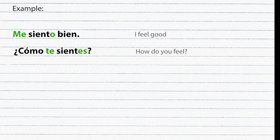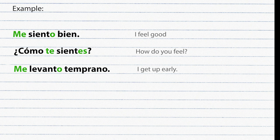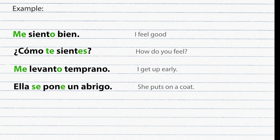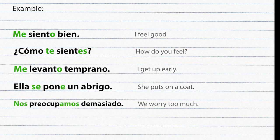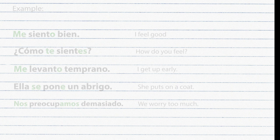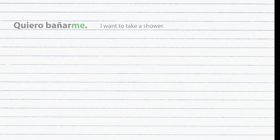Examples: Me siento bien. ¿Cómo te sientes? Me levanto temprano. Ella se pone un abrigo. Nos preocupamos demasiado. The reflexive pronoun is placed before the verb, except when it is an infinitive or a command — in that case, it is attached to the end of the verb.